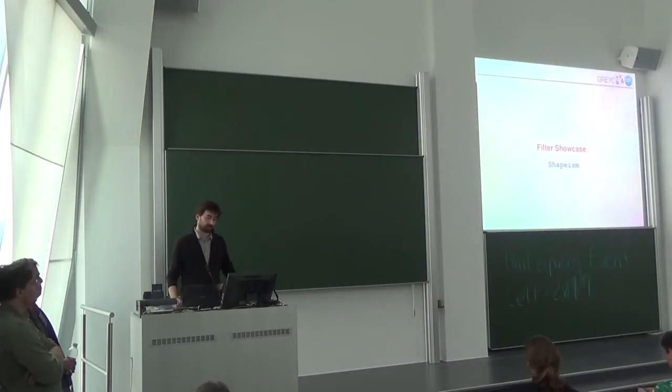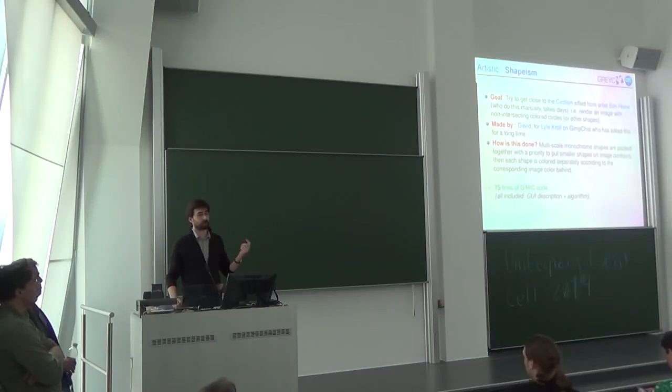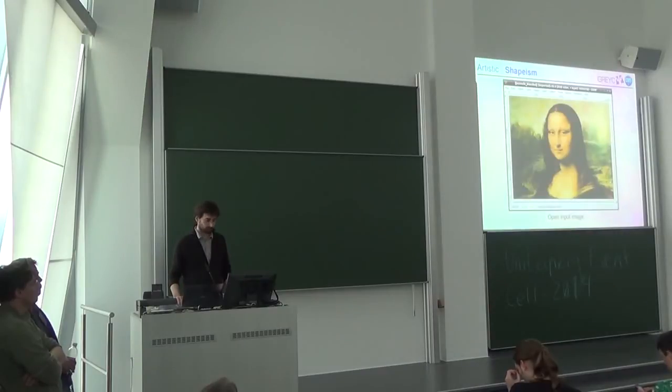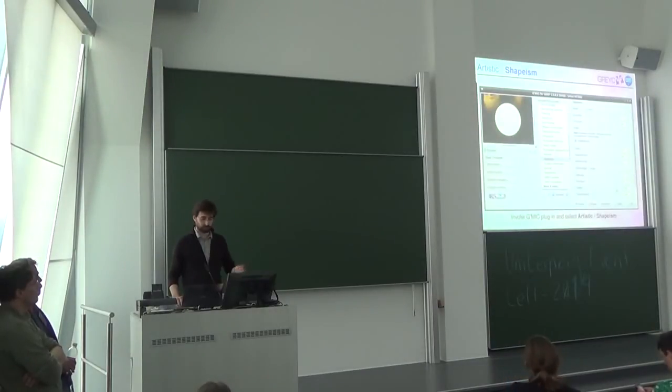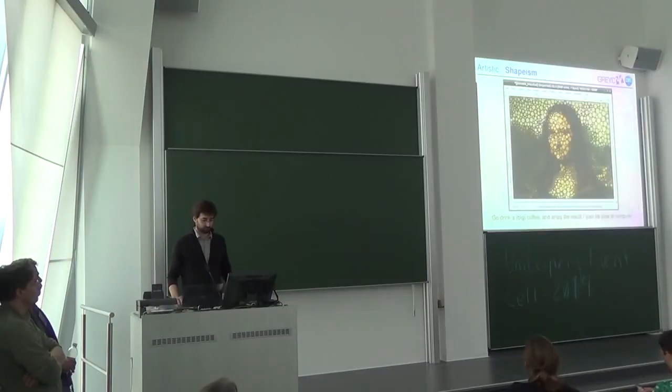So next filter is a bit similar. The button is, but we are constrained with some predefined shapes. And the idea is to get some geometrical shapes and to try to pack them, and to define the color of the shape by the image, the initial image, and the size of the shape by the gradient. So the detail of the image. We start with an image. We open the plugin. We adjust all the parameter. We have a preview. So, here we get the result.